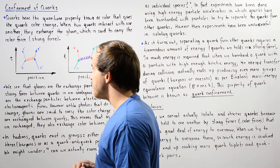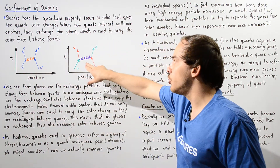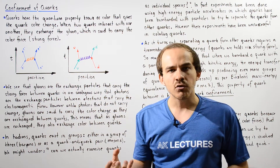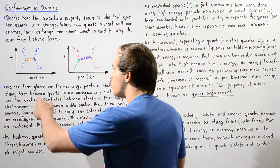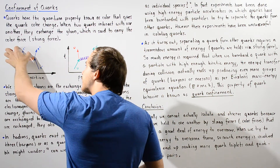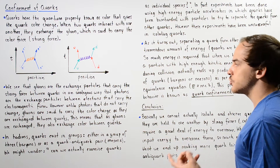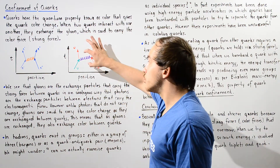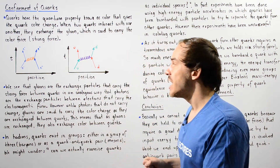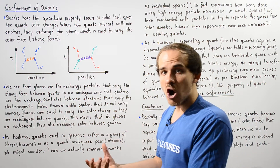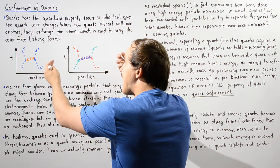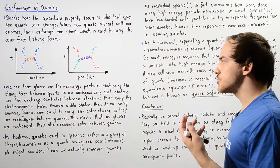An important difference between the photon and the gluon is as follows. The photon does not actually carry electric charge, so whatever the charge of the electron was before the interaction, the charge of that electron is the same after the interaction. However, our gluon actually carries not only the color force — the strong force — it also carries that color charge. So not only do we have an exchange of color force, we have an exchange of color charge.